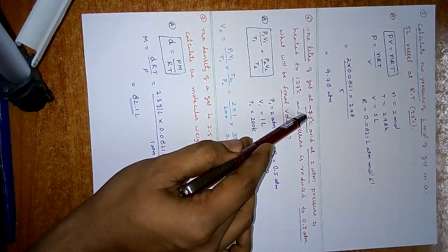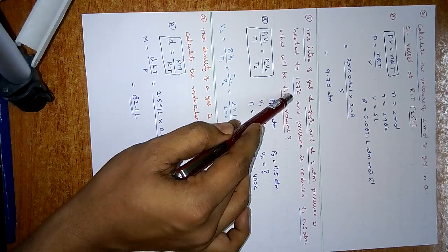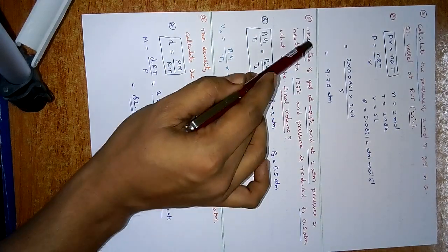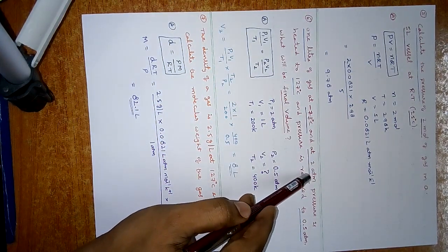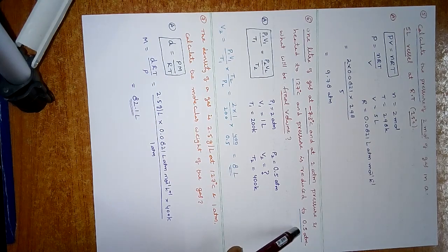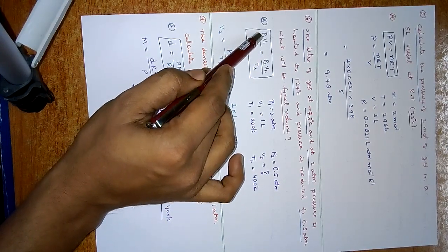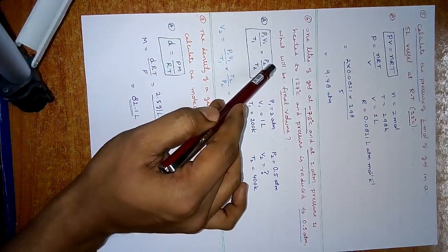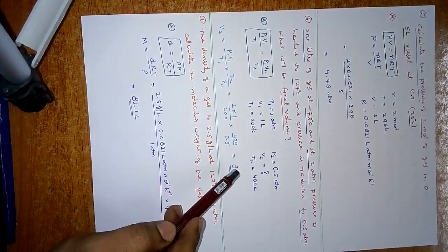1 litre of gas at −73°C and 2 atm pressure is heated to 127°C, and pressure is reduced to 0.5 atm. What will be the final volume? Initially V1 = 1 litre, T1 = −73°C, P1 = 2 atm. Finally T2 = 127°C, P2 = 0.5 atm. Using the combined gas equation P1V1/T1 = P2V2/T2, we know all 5 terms except V2. Substituting gives V2 = 8 litres.